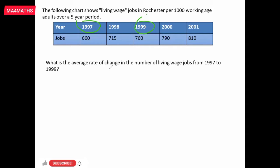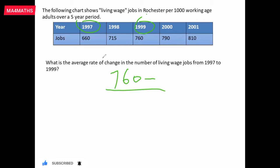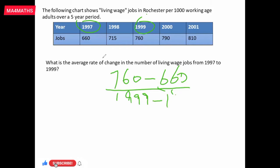We will use the formula for average rate of change. We will find the change in the jobs: final minus initial for the jobs, and final year minus initial year for the time.